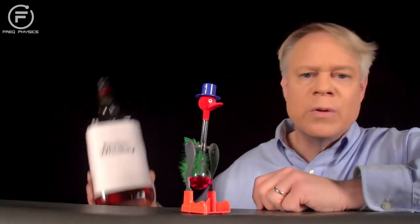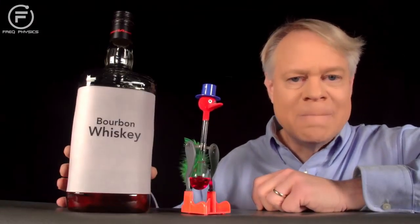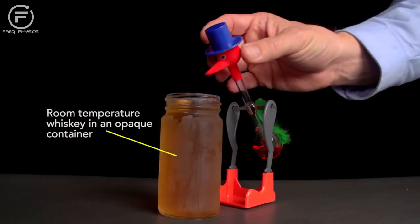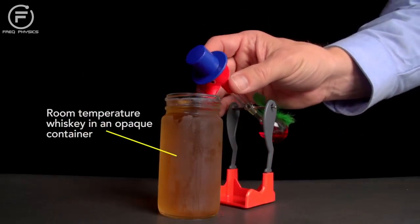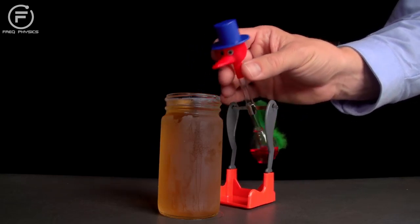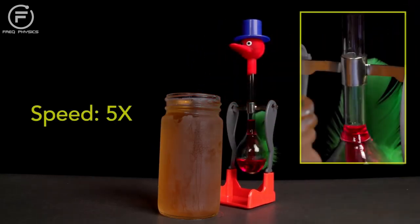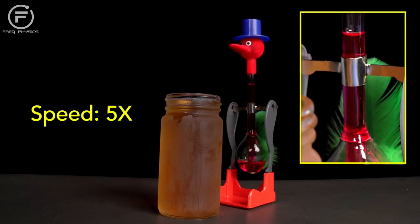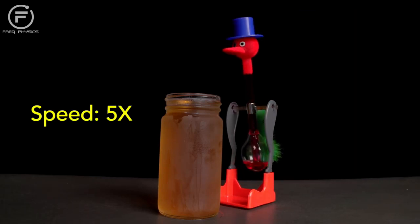Next, let's see what happens if we use whiskey. Again, thoroughly wet the bird's beak with the liquid, stand it upright, and then we see again the liquid rising in the bird and then it drinks.